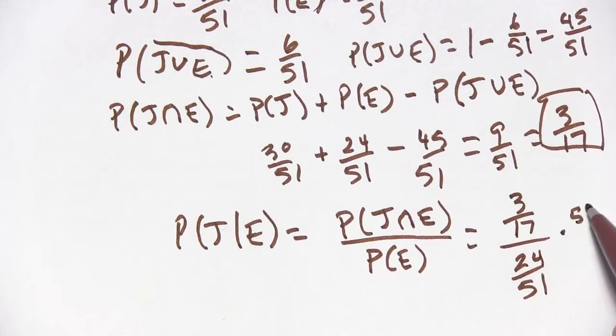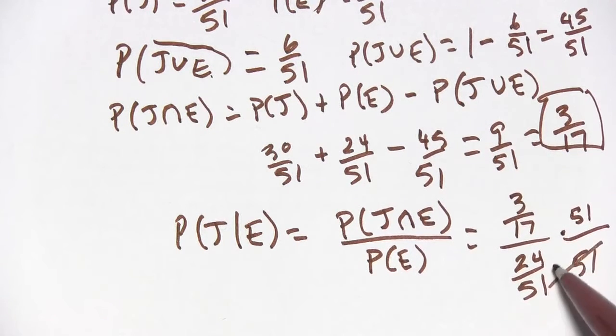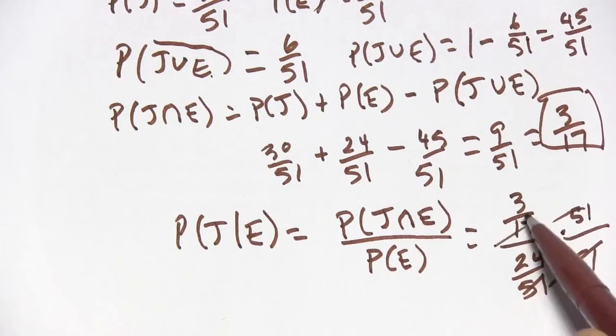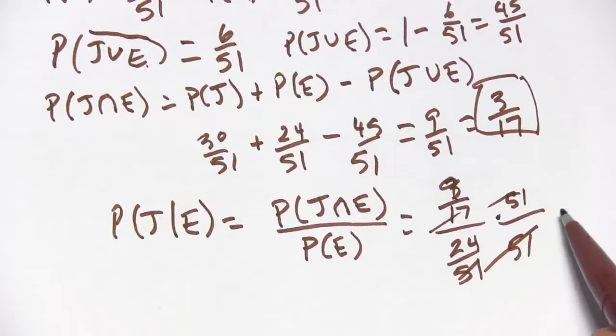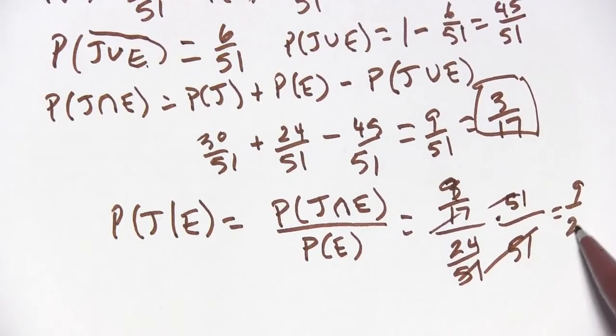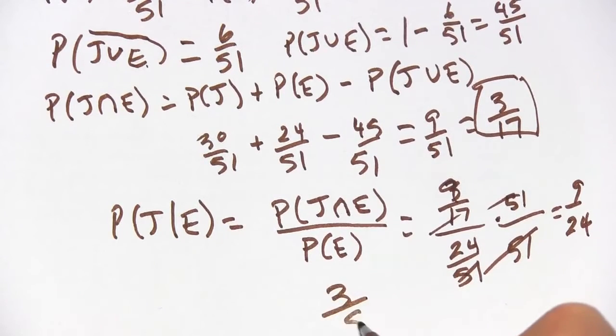I think I'm going to multiply the top and the bottom by 51. So that will cancel. There are 3 17ths and 51. So that's going to become a 9. So that's 9 24ths. And that simplifies to 3 8ths.